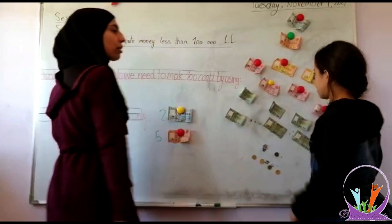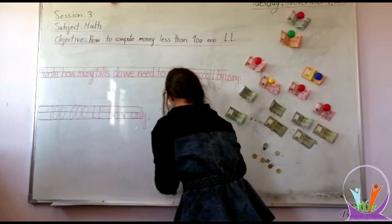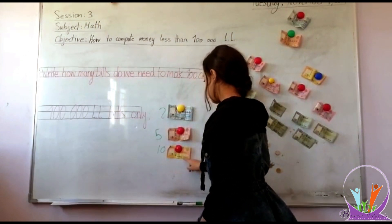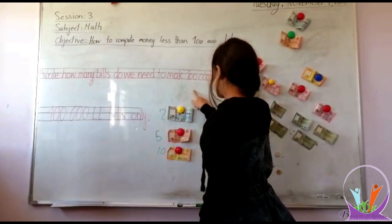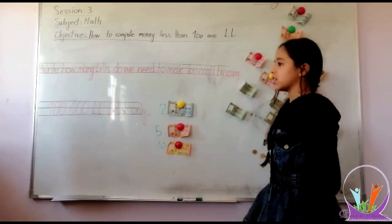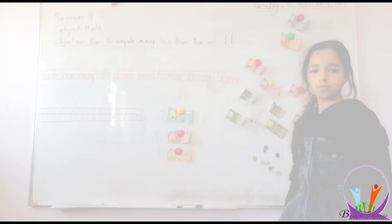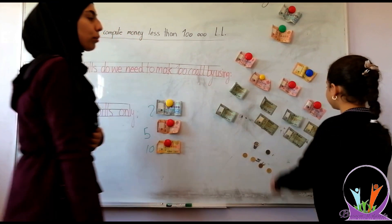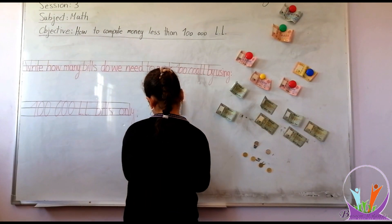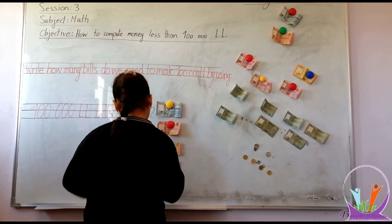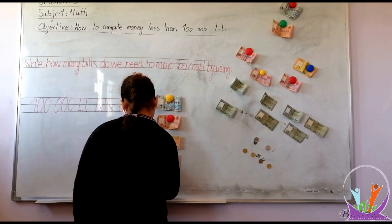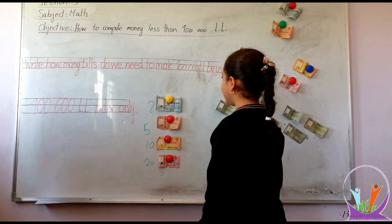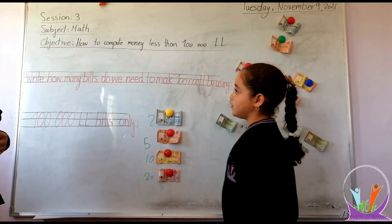Use another one to make 100,000 PYRB. How many bills do we need to make 100,000 PYRB? Very good. Use another one to make 100,000 PYRB. 25,000 PYRB equal to 100,000 PYRB. Very good.